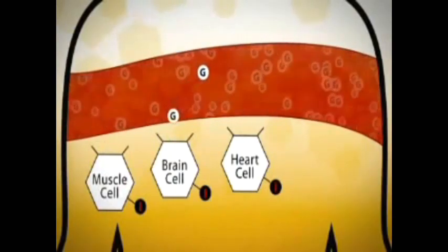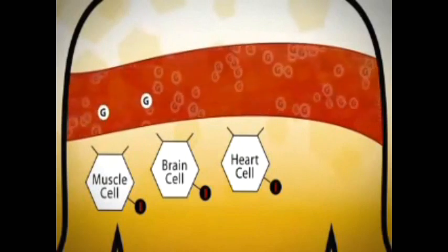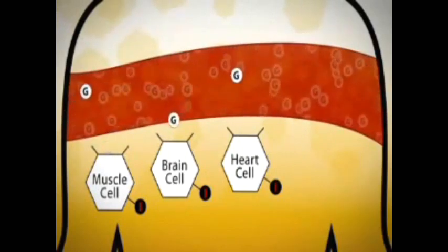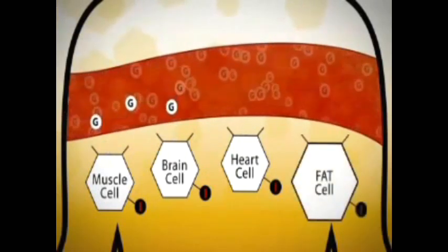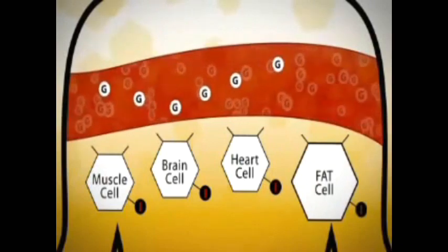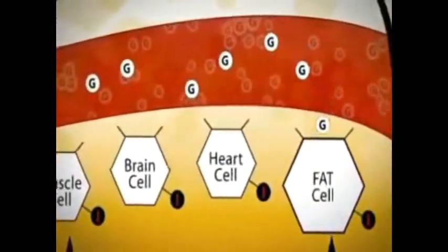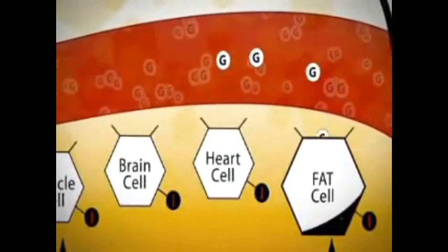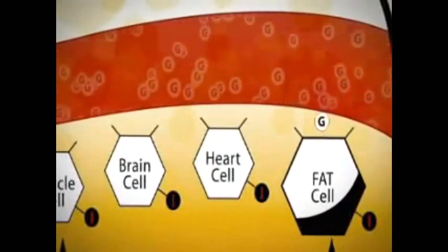What if we eat more than we need? Well, along with our brain cells and muscle cells, we also have fat cells. Our cells never eat more than they need, so when we have more glucose than our cells can use, the excess amount is stored in our fat cells where it is converted into free fatty acids.